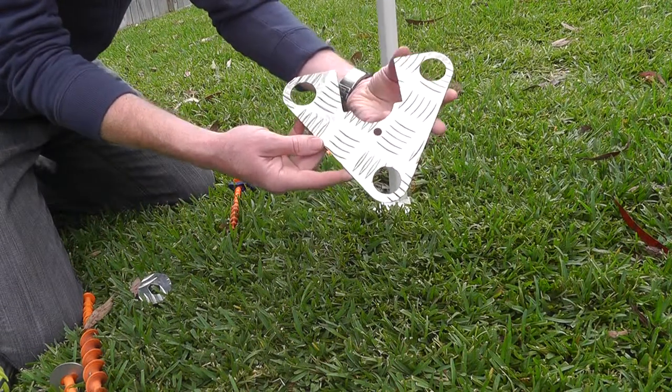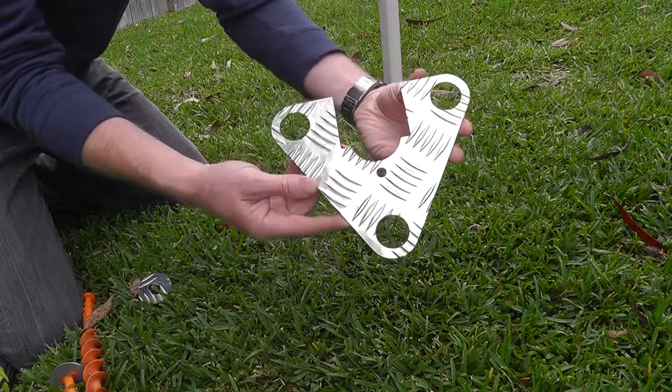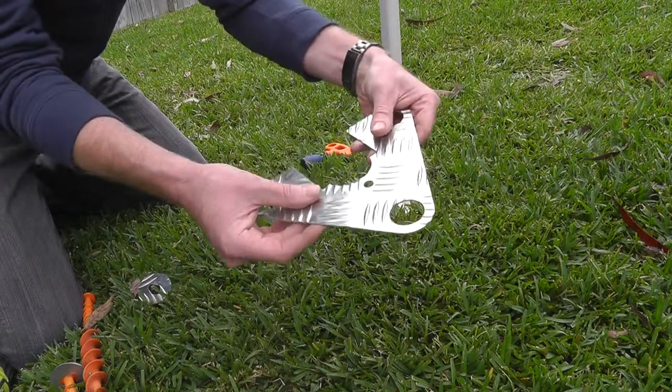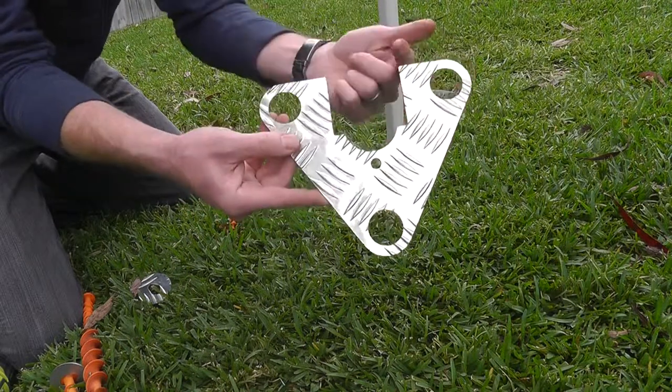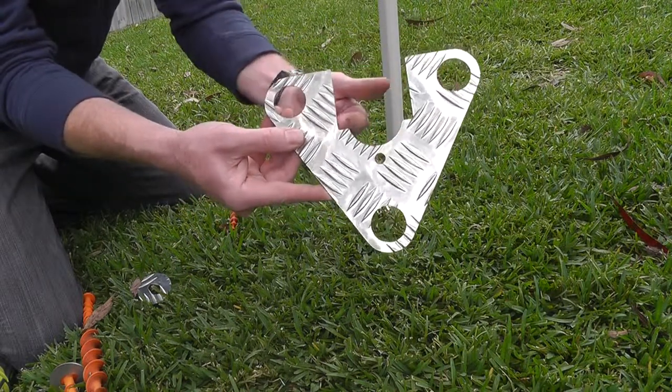We're here to introduce the new addition to the Peggy Peg Range. It is the Bigfoot Awning Plate. It's made of a 2mm aluminium checker plate. It's got a cutout here for caravan and awning legs.